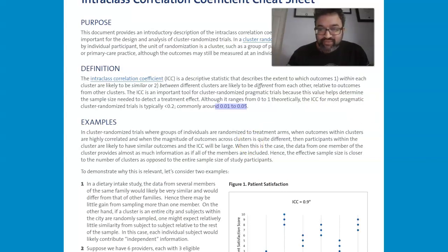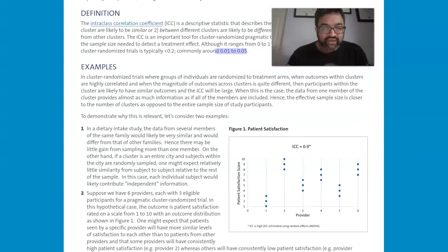So let's take a look at some examples, two examples. One, in a dietary intake study, data from several members of the same family would likely be very similar. And so that would differ from other families. There may be little gain from sampling more than one member in the same family.